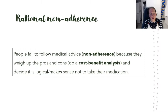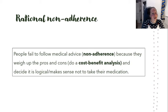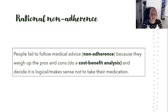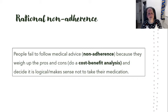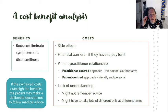The first explanation we look at is called rational non-adherence. Adherence is when you stick to something, so non-adherence is when you don't. Rational means you've thought about it sensibly and come to a conclusion. In a sentence: people fail to follow medical advice — non-adherence — because they weigh up the pros and cons. They do a cost-benefit analysis and then decide it's logical not to take their medication. That's why it's called rational non-adherence.